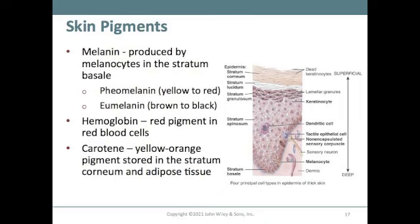People have roughly the same number of melanocytes in their cells. People with darker skin don't have more melanin than people with lighter skin — their melanin simply has a different pigment, which gives the skin a different shade.